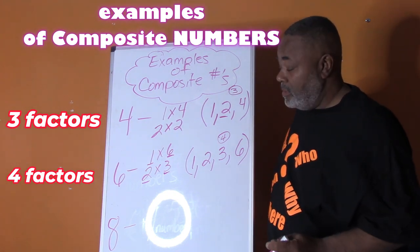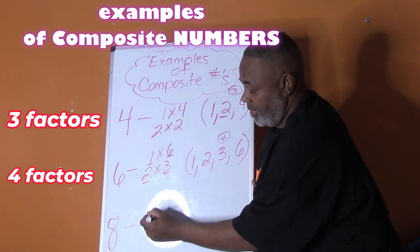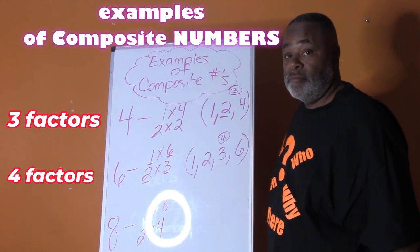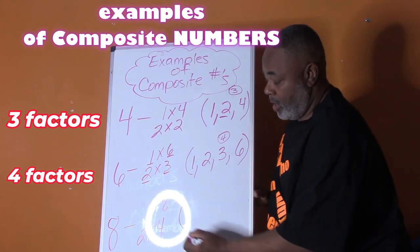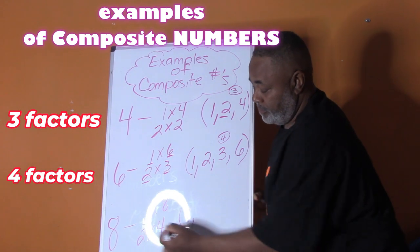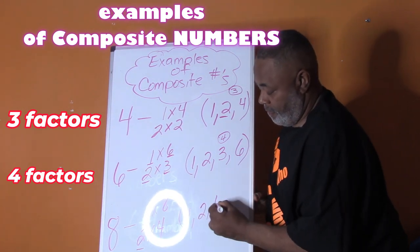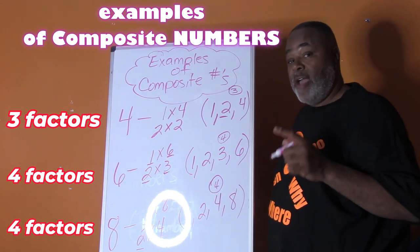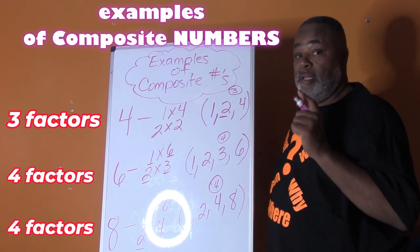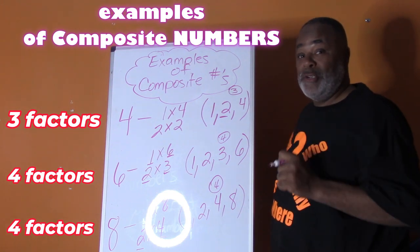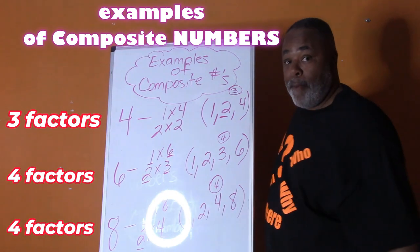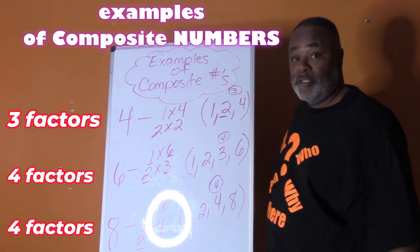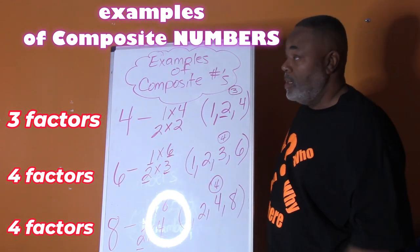What numbers can we multiply to give us eight? One times eight, and two times four. Are there any other numbers we can multiply to give us eight? This is it. So the factors of eight are one, two, four, and eight — also four factors. Does that satisfy the definition of composite numbers, which states it has more than two factors? Yes! Three is more than two, four is more than two. So four, six, and eight are examples of composite numbers.